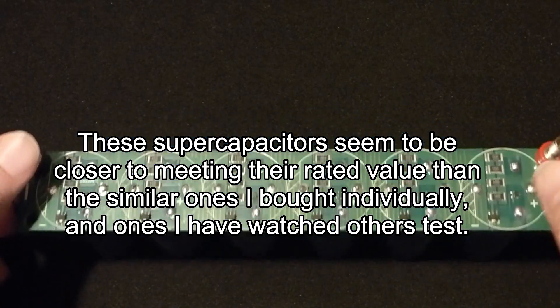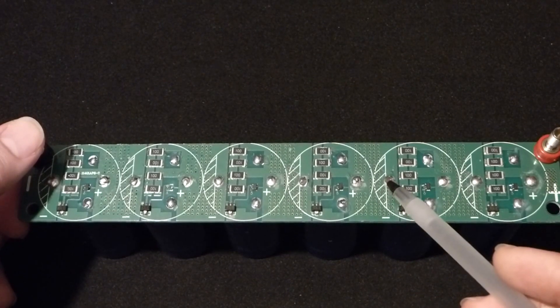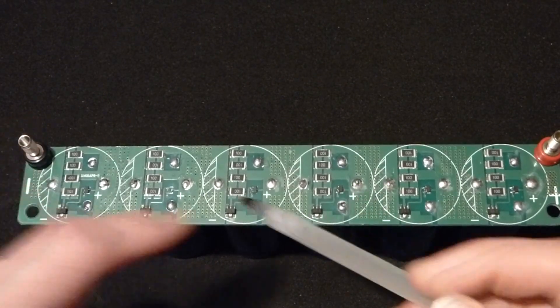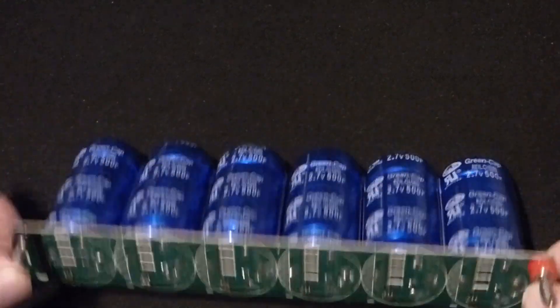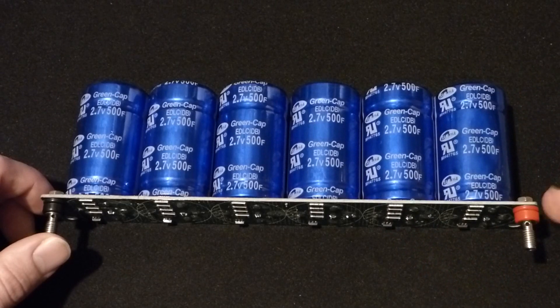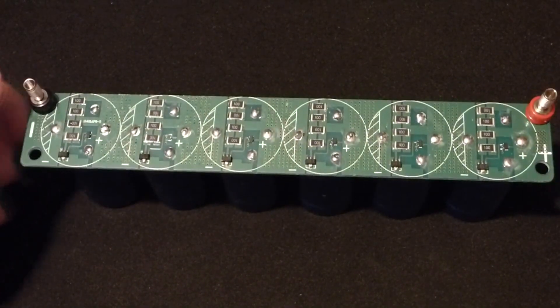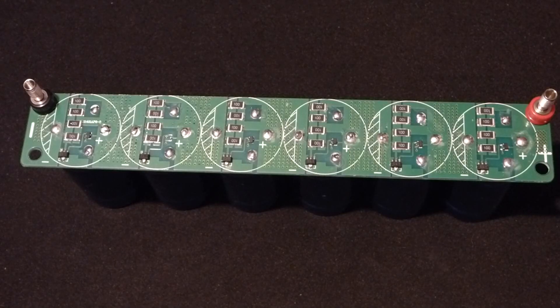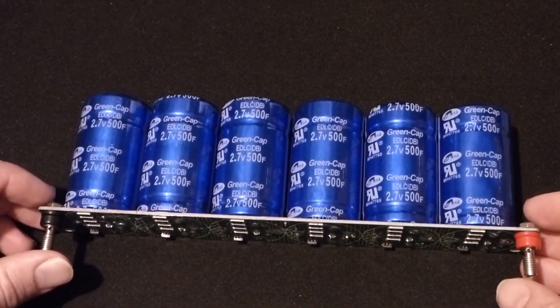They're connected in series. This board connects the negative of one super capacitor to the positive of the other, and they're all connected like that, negative to positive. So they're rated for 2.7 volts each, but when you put them in series like this, that voltage multiplies. So that's 2.7 times 6, that's 16.2 volts.